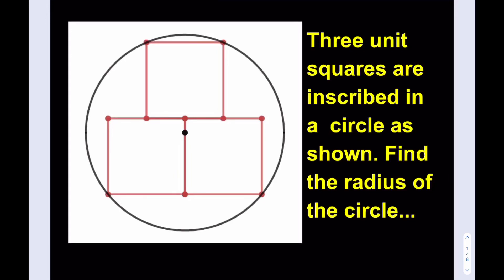Hello everyone. In this video, we're going to be solving a geometry puzzle, which is really cool. Three unit squares are inscribed in a circle as shown. Find the radius of the circle.